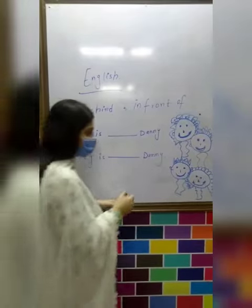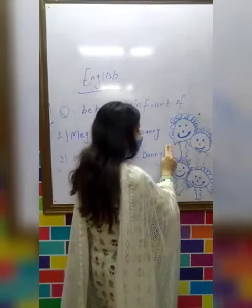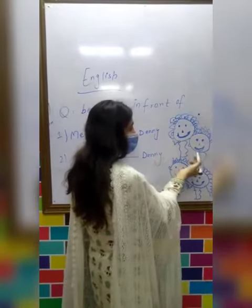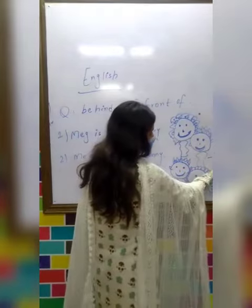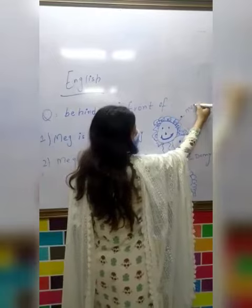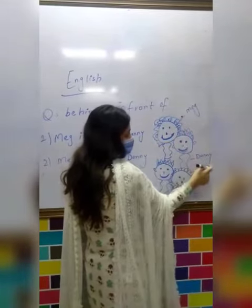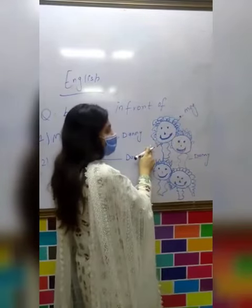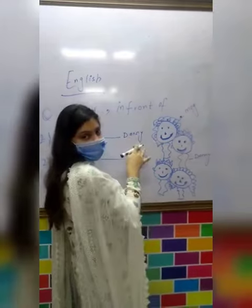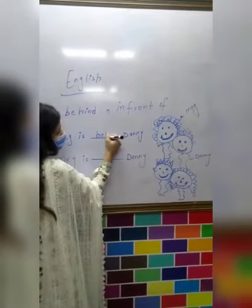For example, we have Danny and we have Meg. So Meg is behind Danny. Meg is 'piche khaadi bhiye' (standing at the back). So Meg is behind, and Danny is in front.